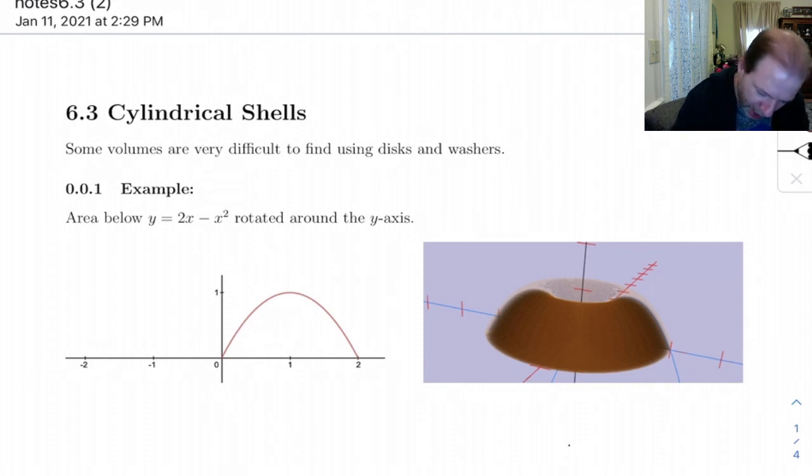We've got a parabola, y equals 2x minus x squared, and we want to take this and rotate it around the y-axis. So the opposite side is going to look something like this, and we're going to get a shape that looks like this right here.